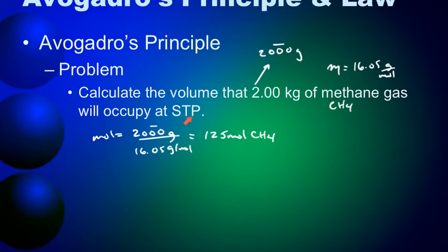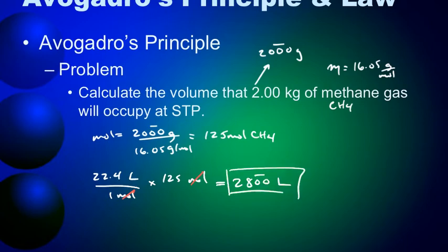And then since this is at STP, we should be able to figure out how much space this is going to take up. We had 22.4 liters per one mole. If we multiply that times 125 moles, that will cancel your moles unit and leave you with liters, which would tell us how much space that's going to take up. And the answer is it's going to be a very big space. 125 times 22.4, this is roughly 2,800 liters of space.